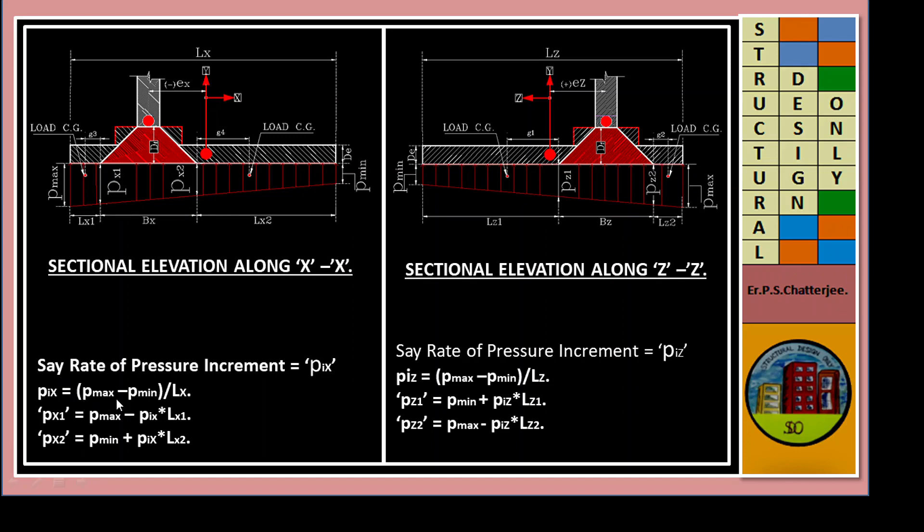PIX equals P-max minus P-min divided by LX. Similarly, in this portion PIZ equals P-max minus P-min divided by LZ. PX1 equals P-min plus PIX times LX1 and PX2 equals P-min plus PIX times LX2. Similarly, PZ1 equals P-min plus PIZ times LZ1 and PZ2 equals P-max minus PIZ times LZ2.